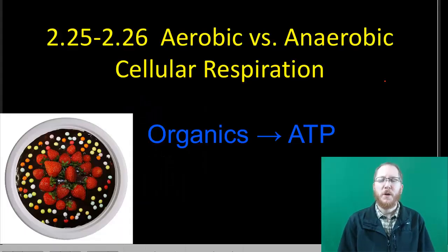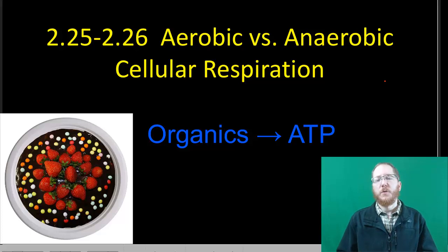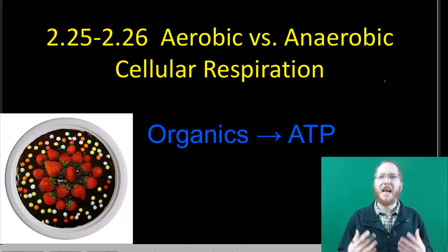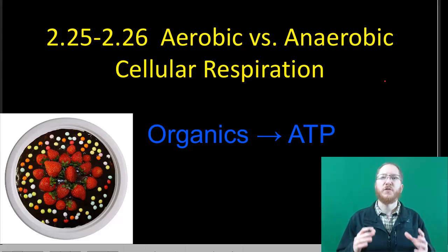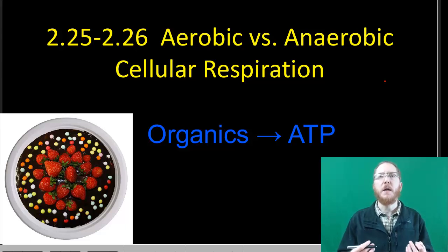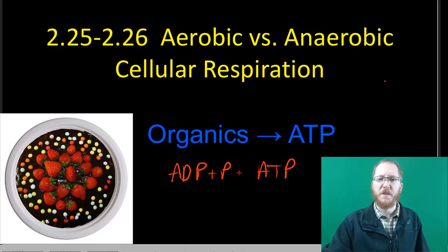Welcome to sections 2.25 and 2.26, where we're going to introduce the basics of cellular respiration and talk about the differences between the two main pathways: aerobic and anaerobic. Cellular respiration is the process where we take organic compounds — glucose is our poster child — and break those into smaller pieces, usually CO2. The energy released will be used to rebuild ATP from its pieces, which is ADP and inorganic phosphate. So we take ADP, which has two phosphates, and add a phosphate to make ATP, which has three phosphates.